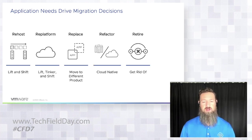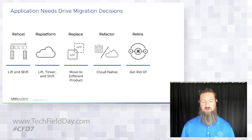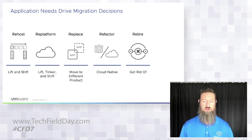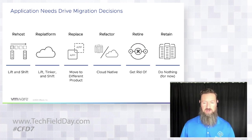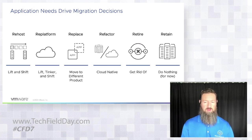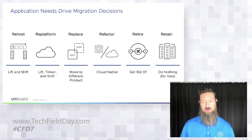Retiring is when you've got applications on premises and as you move other workloads to the cloud, you realize you don't need a certain application or host anymore. You just retire it — clearing up floor space or compute resources in the vSphere instance. And lastly, Retain means doing nothing. You're moving some things to the cloud and modernizing some apps, but some things stay in the data center because they can only function there, or it's just not in the budget or on the roadmap to handle them right now.